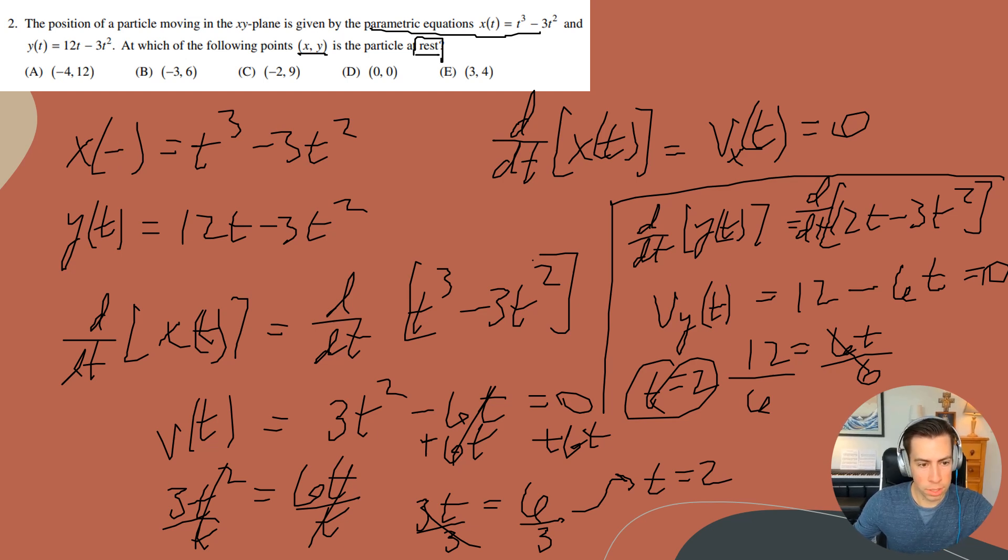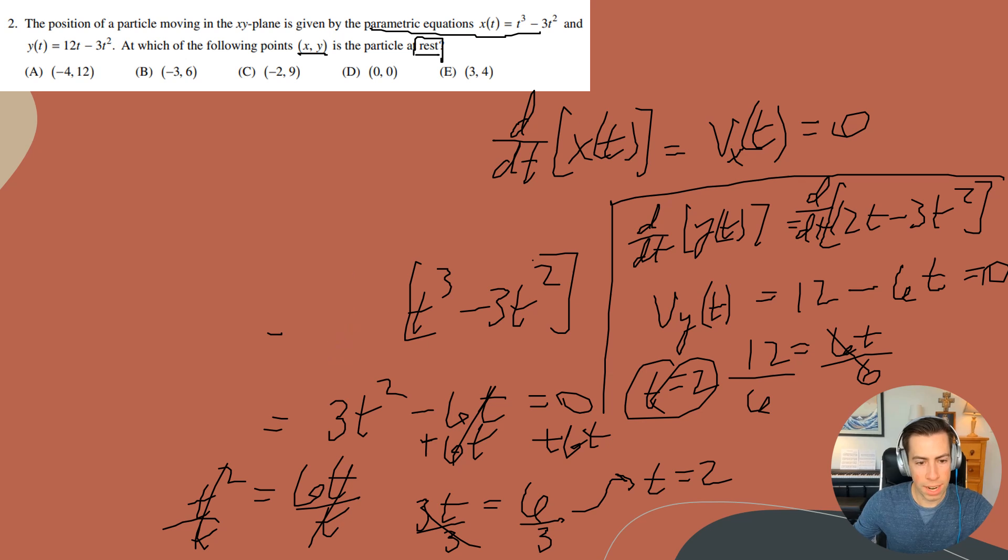So what I'm going to do here is let me clear some space, and I'm going to plug in t equals 2 into both of those equations. And I'm going to get the exact x and y coordinate. So for the x coordinate, I want to take my function here, x(t), and I wanted to do it at whenever t equals 2.